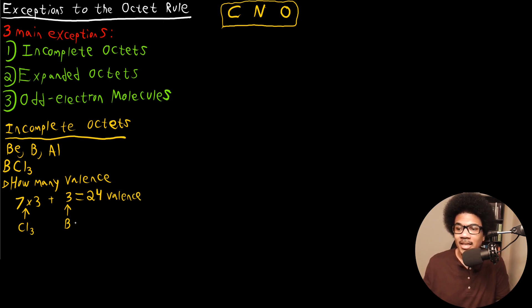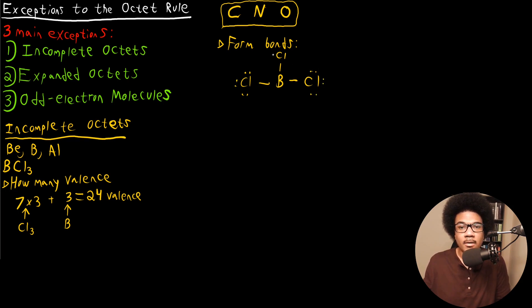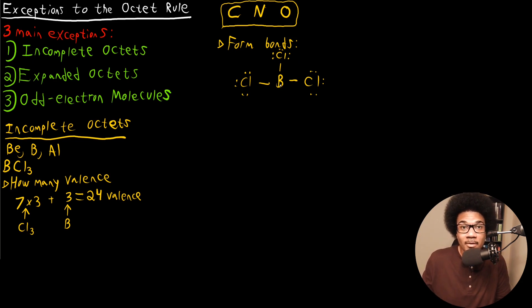Now we want to connect each of these atoms to each other and form the bonds. I'm going to put boron in the center with three chlorines attached to it. We've accounted for six electrons in those bonds, so we still have 18 electrons to account for. Considering the rules of electronegativity with lone pairs, we give the lone pairs to the chlorine atoms — adding six, twelve, eighteen electrons — giving us 24 electrons total. But we have a boron atom at the center that does not have a full valence shell; it only has six electrons attached to it.